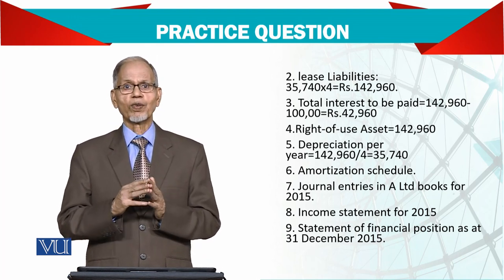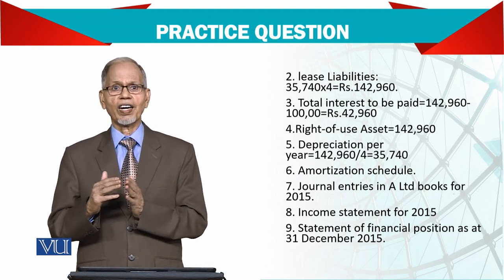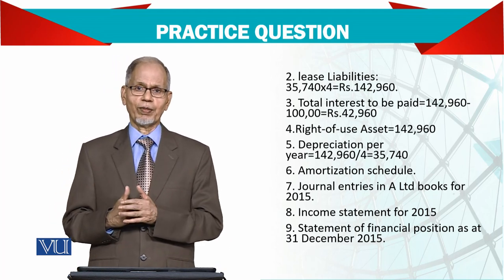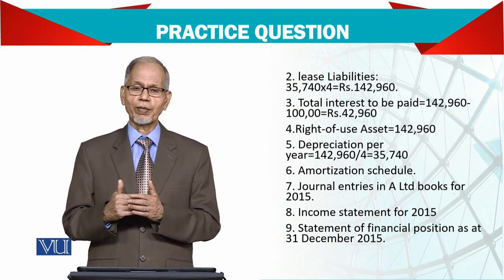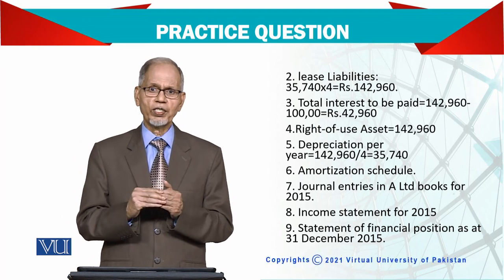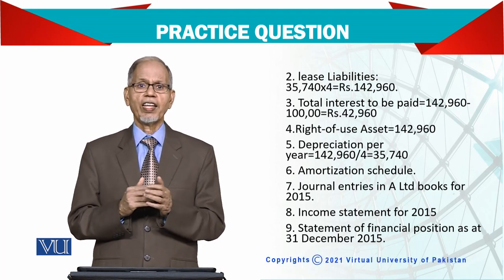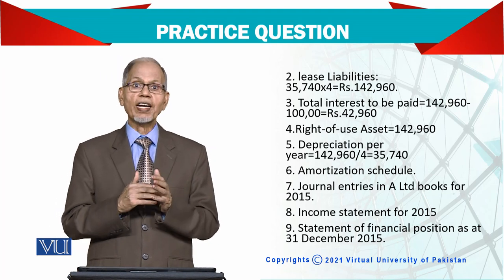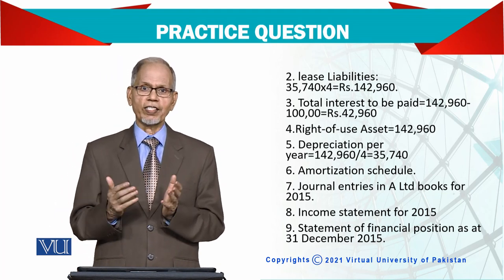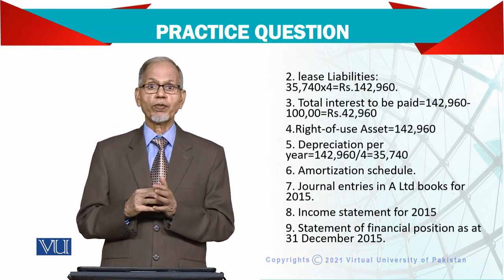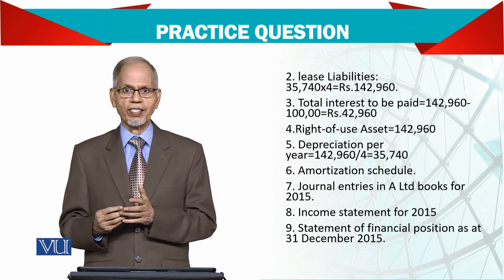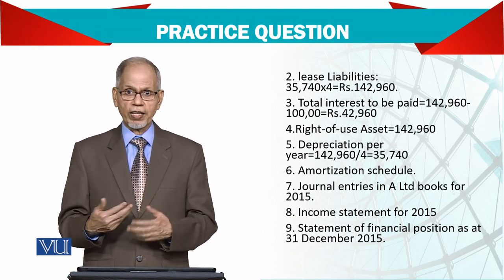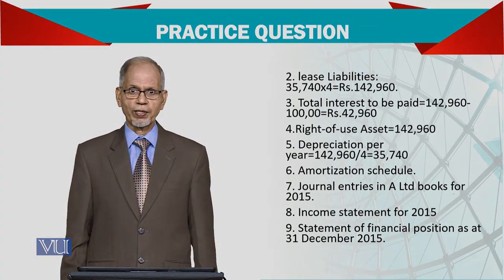From the leased asset, we show what goes to the balance sheet and what goes to the income statement. In the income statement we show the depreciation and the interest. In the balance sheet we show the asset minus accumulated depreciation, and also the lease liabilities. Let's see the solution.